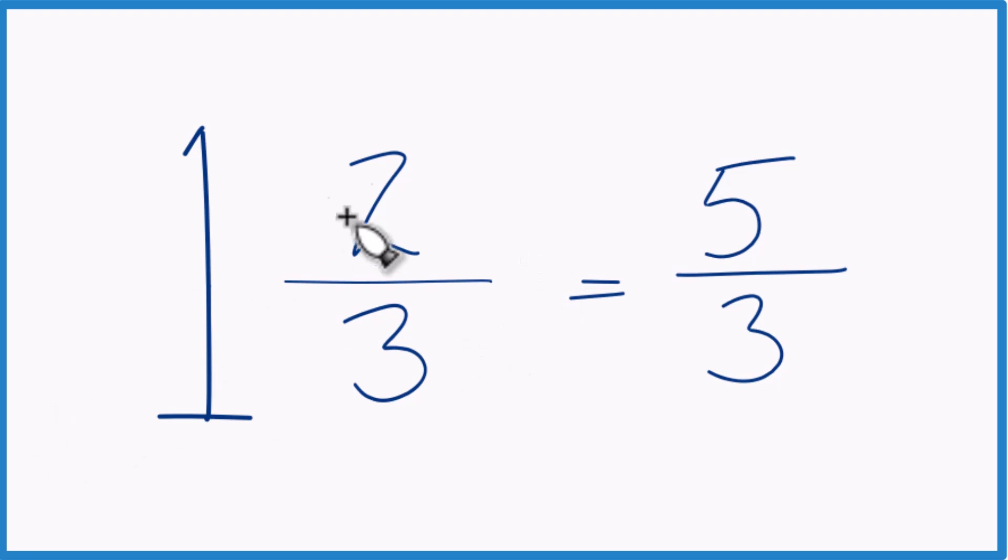Let's do this one more time. We take 1 times 3, that's 3, 3 plus 2, that gives us the 5, the numerator. Just bring the 3 across.